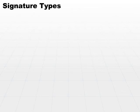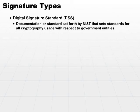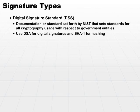Continuing on, there is the DSS, the Digital Signature Standard. The Digital Signature Standard is the documentation or standard set forth by NIST, and it sets the standards for all cryptography usage with respect to government entities. DSS specifies that we use DSA for digital signatures and SHA-1 for the hashing functions. We pull these two together, and that forms the Digital Signature Standard that the government currently uses.